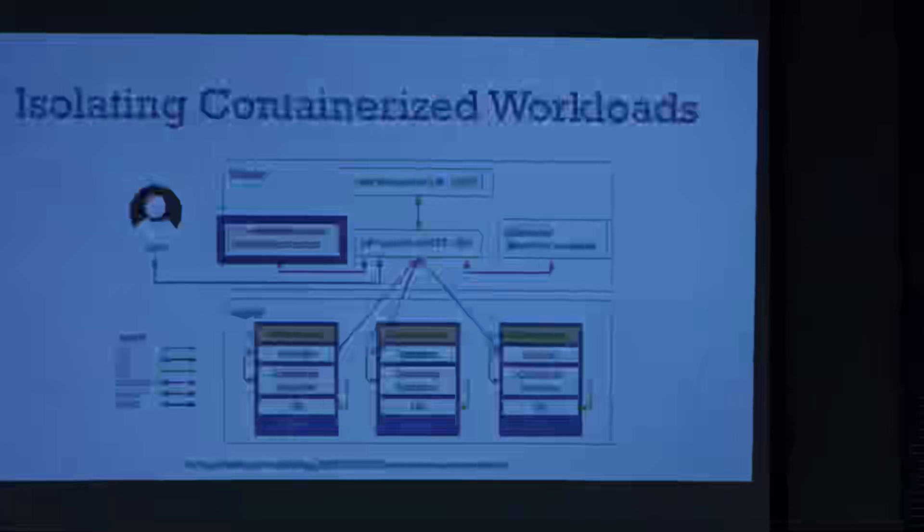Authorization: once we've authenticated you and know who you are — whether your account at the API or your service account — we figure out what you can actually do. When we think about subjects, we have users, service accounts, and groups. Kubernetes pre-RBAC was a real mess — you could do pretty much anything. RBAC came along and is now turned on by default in most implementations. If you build with kubeadm, it has RBAC and admission control turned on.